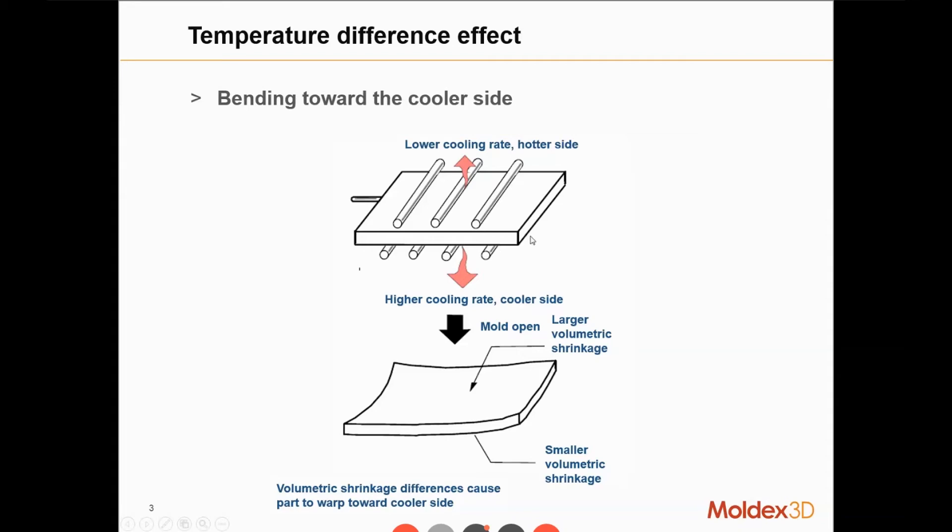First, I'll introduce the temperature difference effect. As you can see, this is a sample here. At the top of the part, we have three cooling channels. On the contrary, there are four cooling channels at the bottom of the mold base. The upper side will be the hotter side, while the bottom side will be cooler.